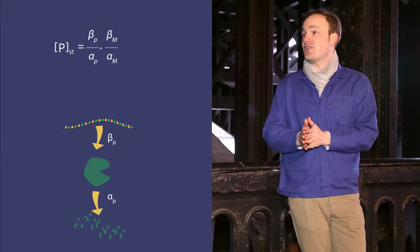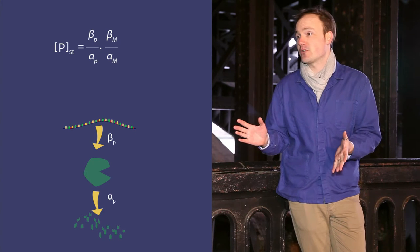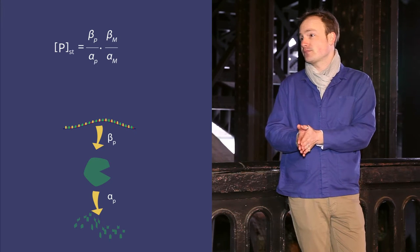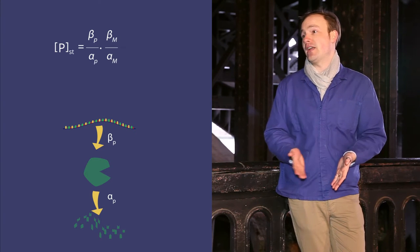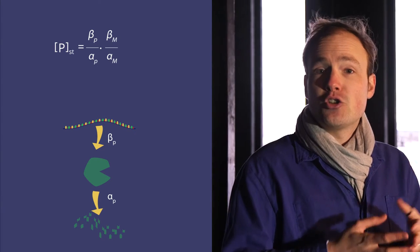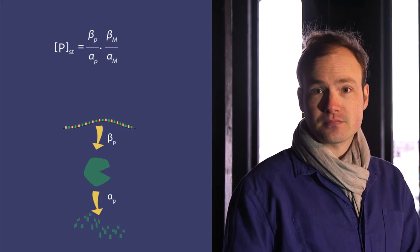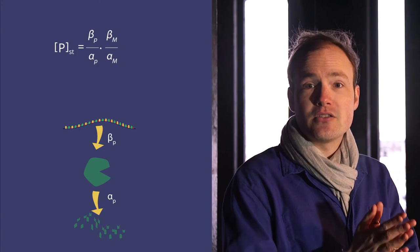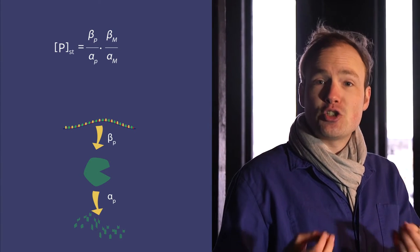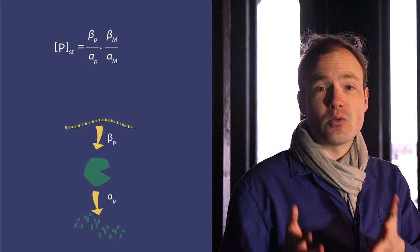As synthetic biologists, we have ways to alter all of these parameters. Two of them align very well with our four modules of gene expression. The mRNA production rate, beta-m, corresponds well with the promoter of the gene. We can change or mutate the promoter sequence to alter beta-m. Similarly, the protein production rate is largely controlled by the ribosome binding site. If we need to change these terms in our designs, we know where in the DNA sequence to look.